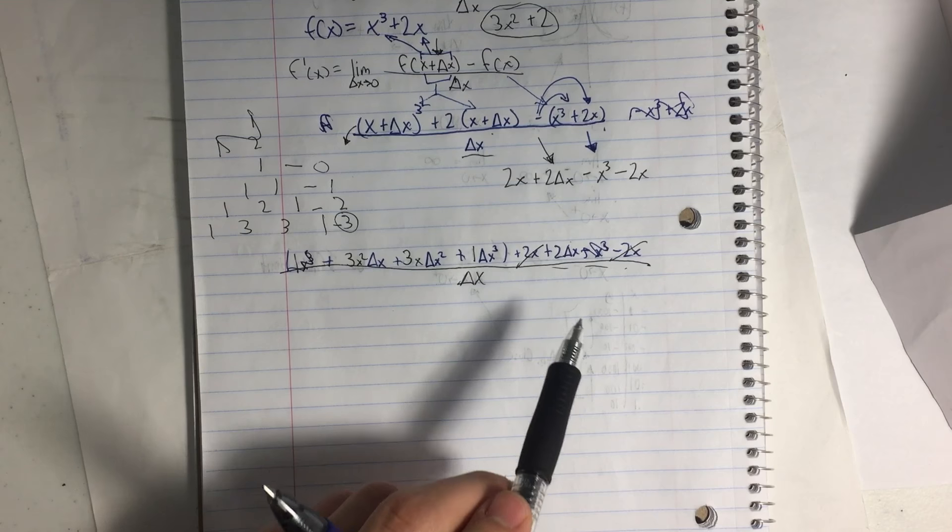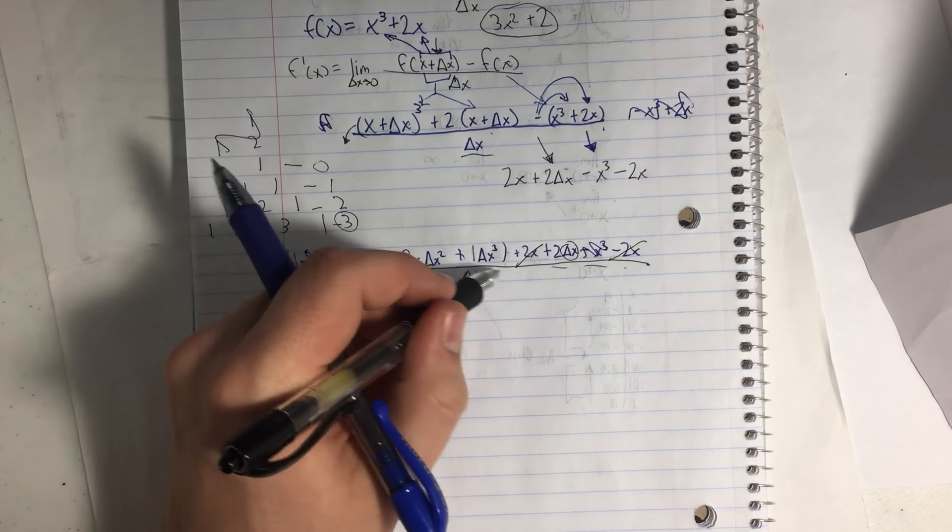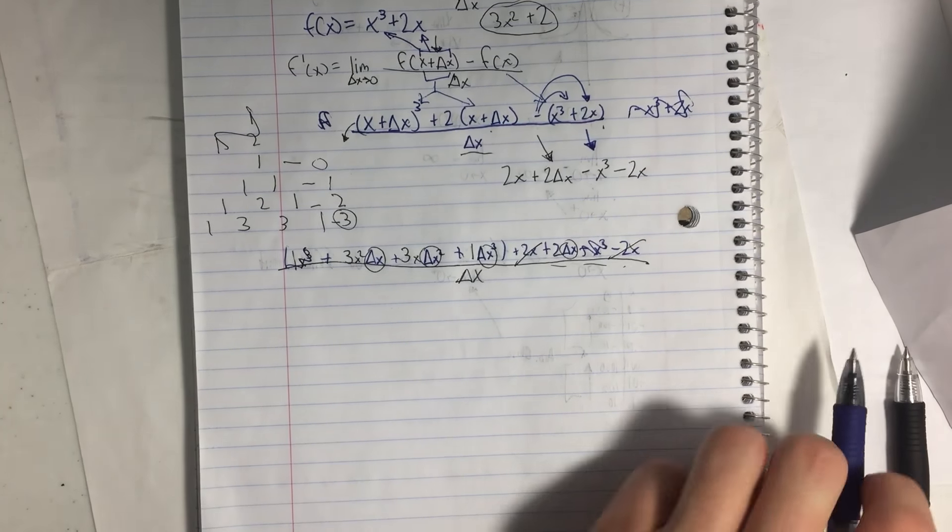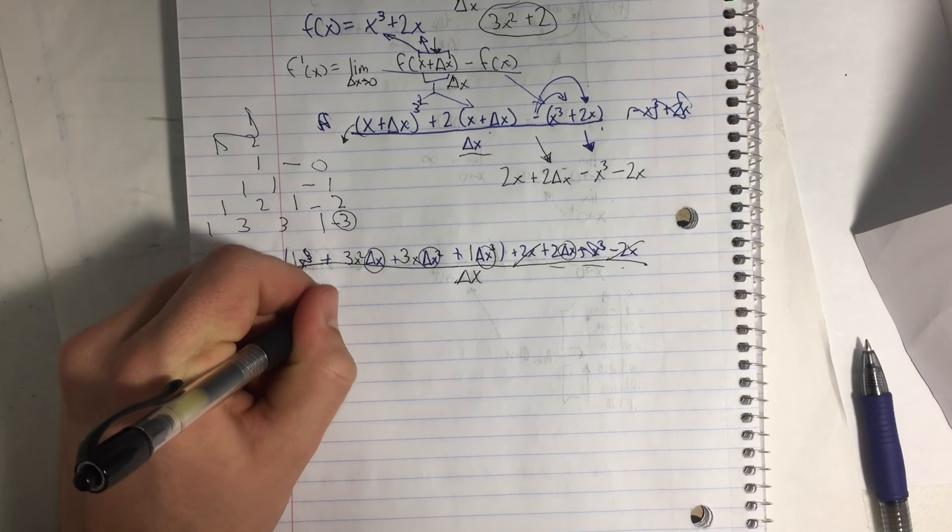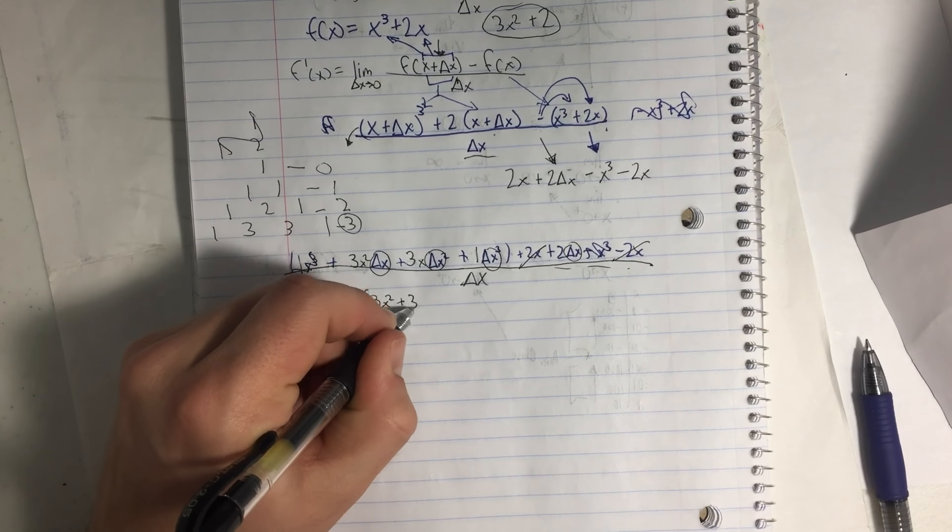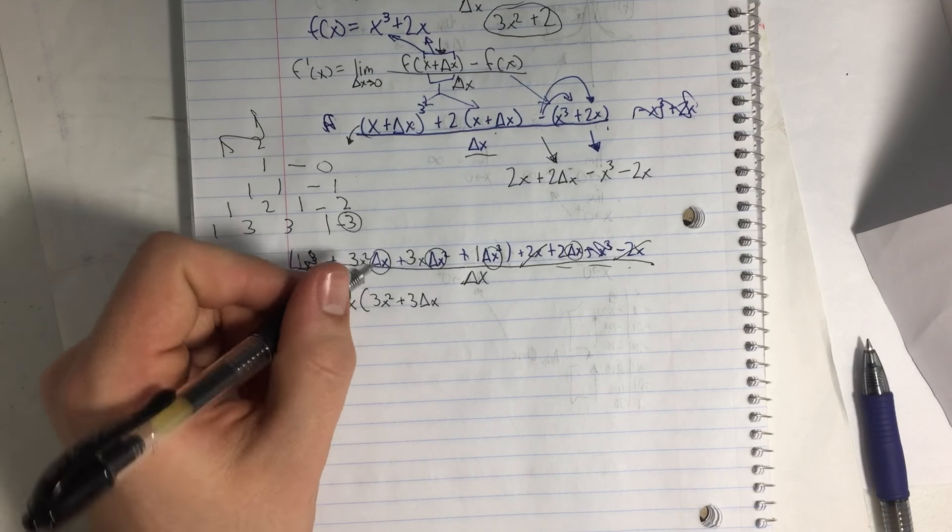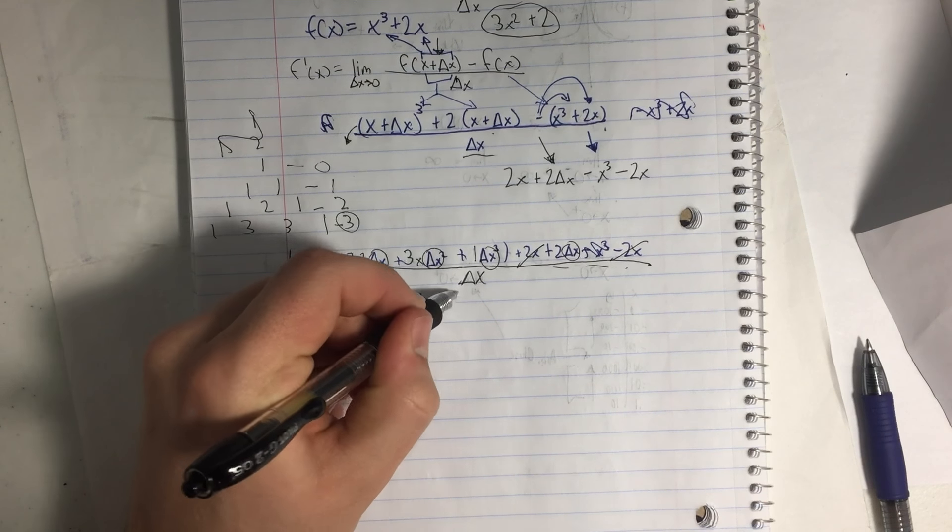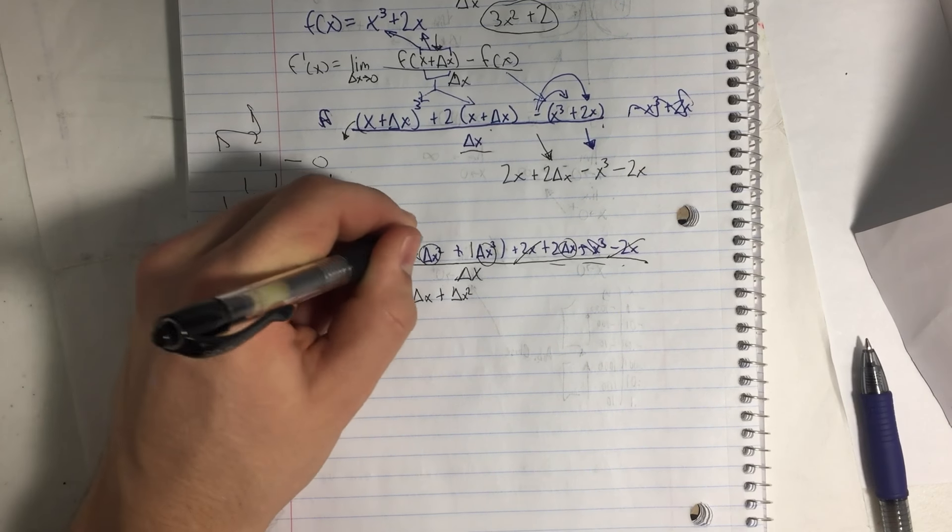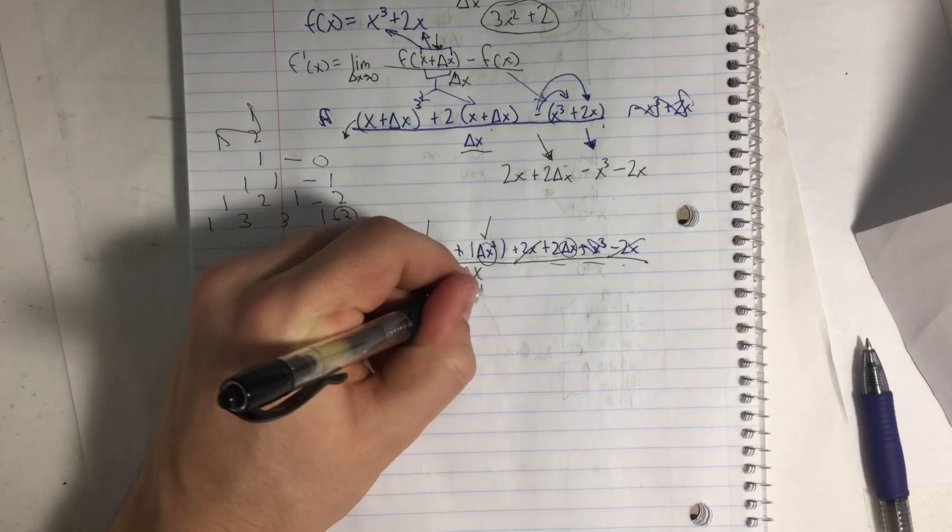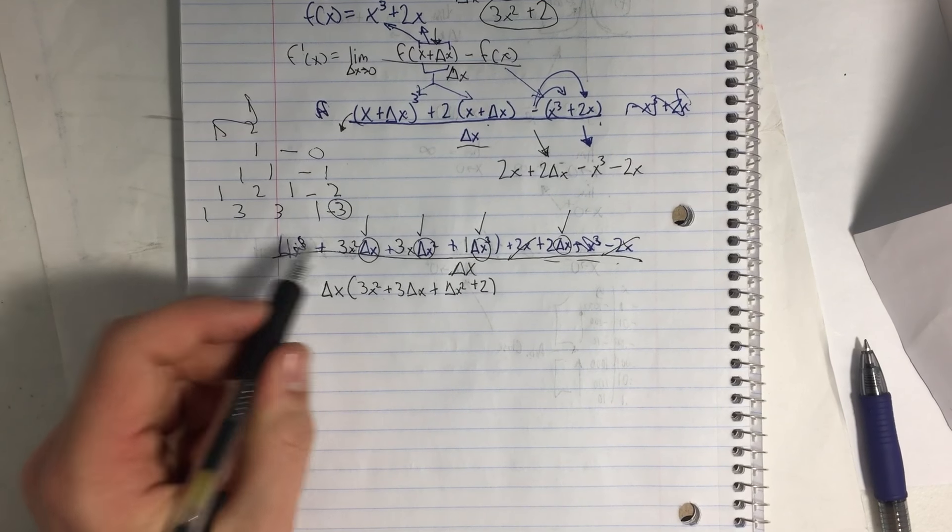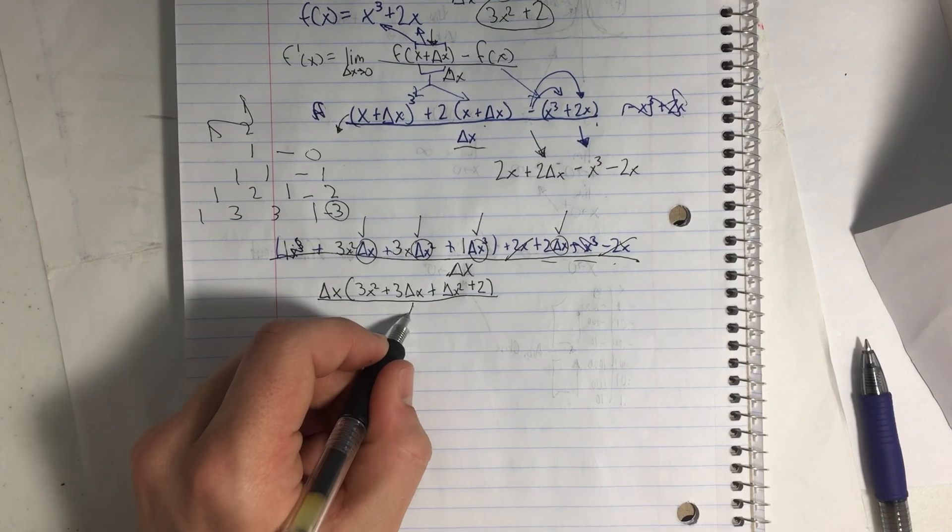I don't see anything else that will cancel out. But I also notice that everything has a Δx in it. Okay. So we're going to pull the Δx out by factoring it out. So we're going to have 3x² + 3Δx + Δx². Right. So we've done this one, we did this one, we did this one, and then plus 2. So now we've hit all our terms in this long thing. They've either been crossed out or moved down. And this is all over Δx.